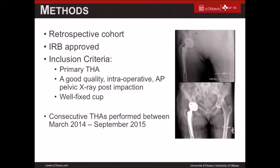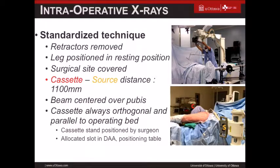This is a retrospective cohort of IRB-approved primary hips. At our center it is standard practice that intraoperative AP pelvises are taken at the time of surgery. This was a consecutive group of patients that had total hip replacement between 2014 and 2015. The technique — either supine or lateral position — is standardized: all retractors are removed, the surgical site is covered, the x-ray technician is called, and a digitized image with proper beam orientation is obtained.